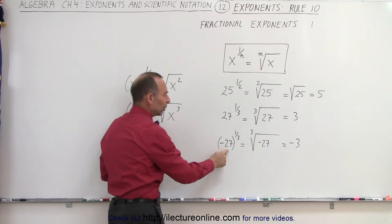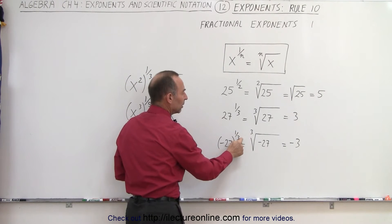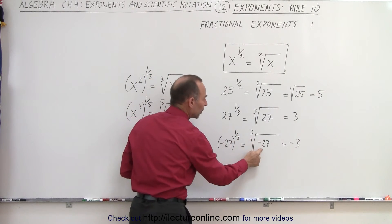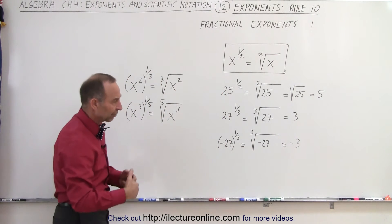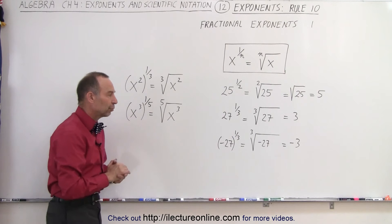And if we have negative 27 raised to the 1 third power, that's equal to the cube root of negative 27, which is negative 3, because negative 3 times negative 3 times negative 3 is equal to negative 27.